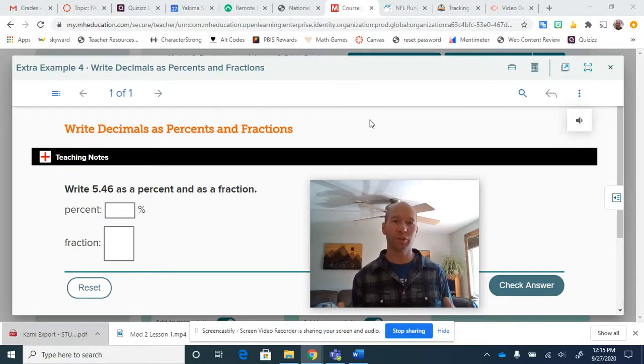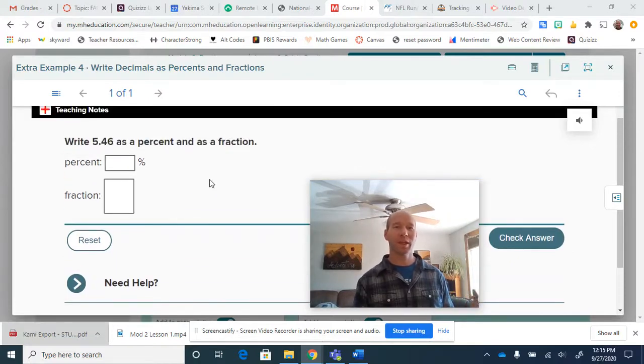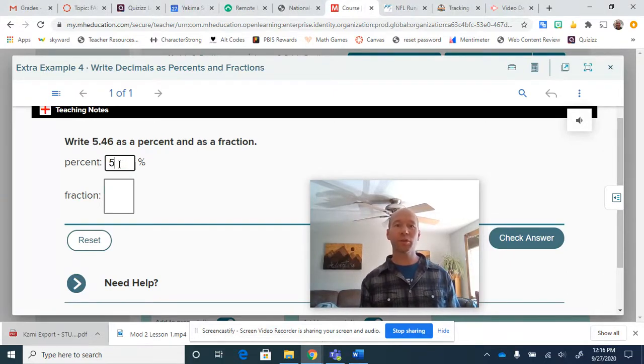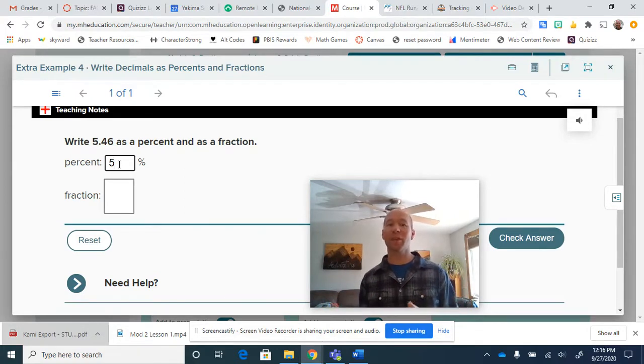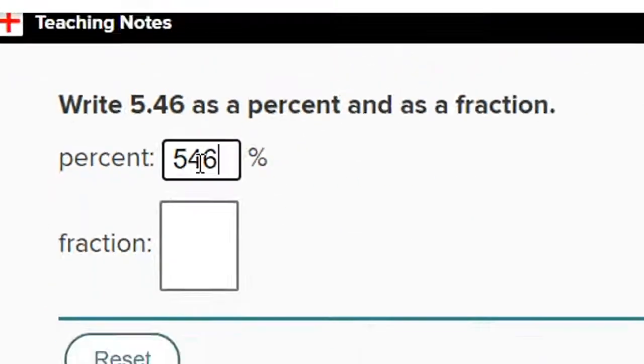Our final skill we are going to develop today is we need to relate decimals to percents and fractions. Write 5.46 as a percent and as a fraction. Well, we can relate that. That five is five wholes, five entire amounts. So we get 500%. It is going to be 5.46. We know that 0.46, that decimal means 4 tenths and 6 hundredths. So 5.46 is 546%.